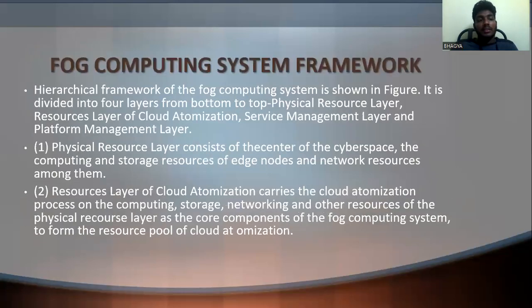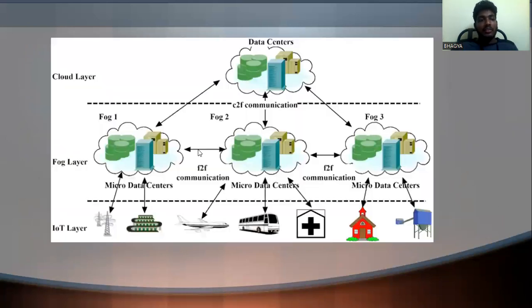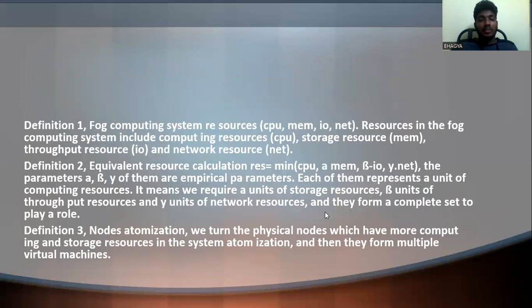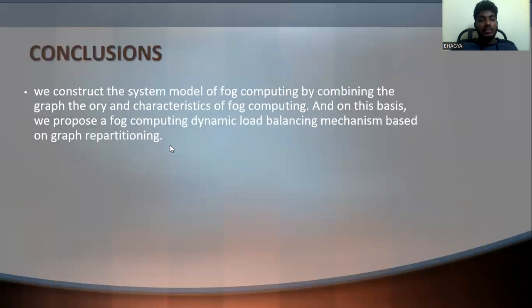Referring to the diagram again, these are the four layers: physical resource layer, resource layer of cloud automation, service management layer, and platform management layer. The fog arrival layer is also visible here. These definitions are very important — they cover fog computing system resources including CPU and memory, and the calculation order of fog computing system resources.